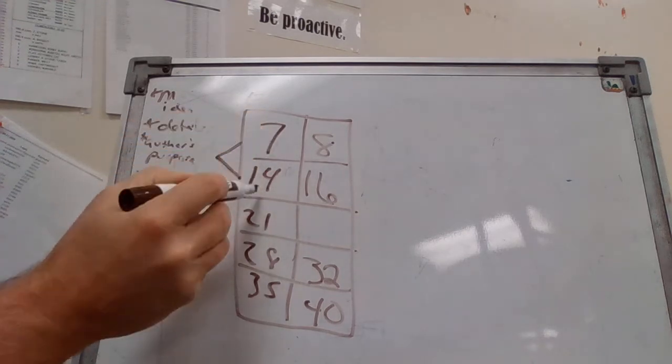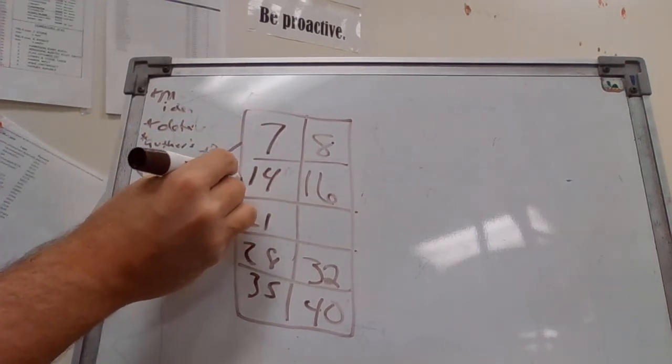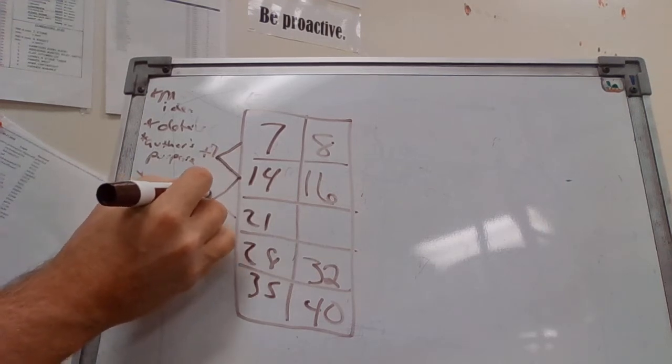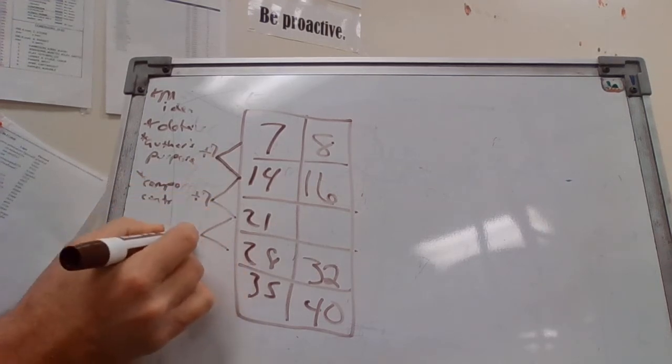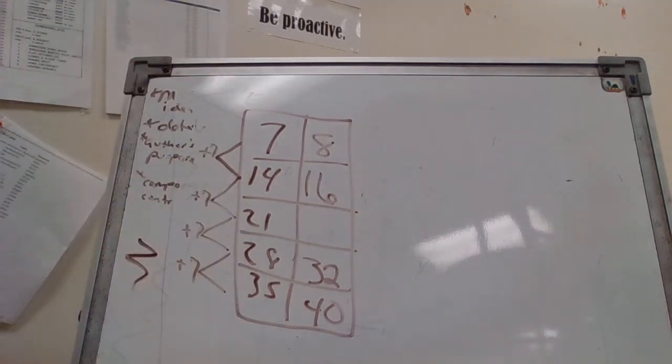changes from 7 to 14 - we'll see it's plus 7. The change from 14 to 21 is plus 7, 21 to 28 is plus 7, 28 to 35 is plus 7. So it's got to be a consistent change there. Same